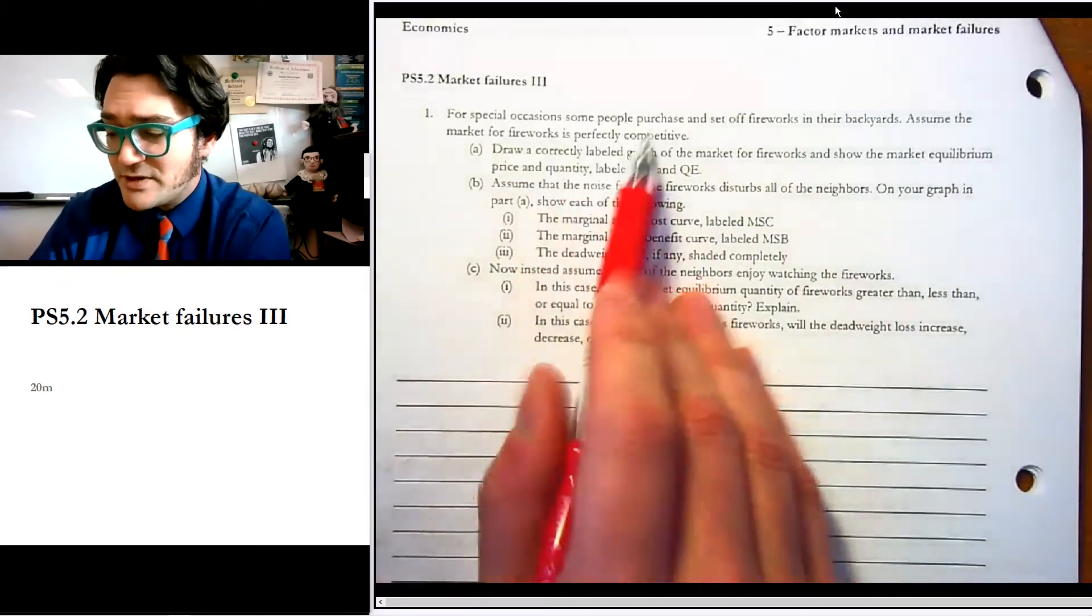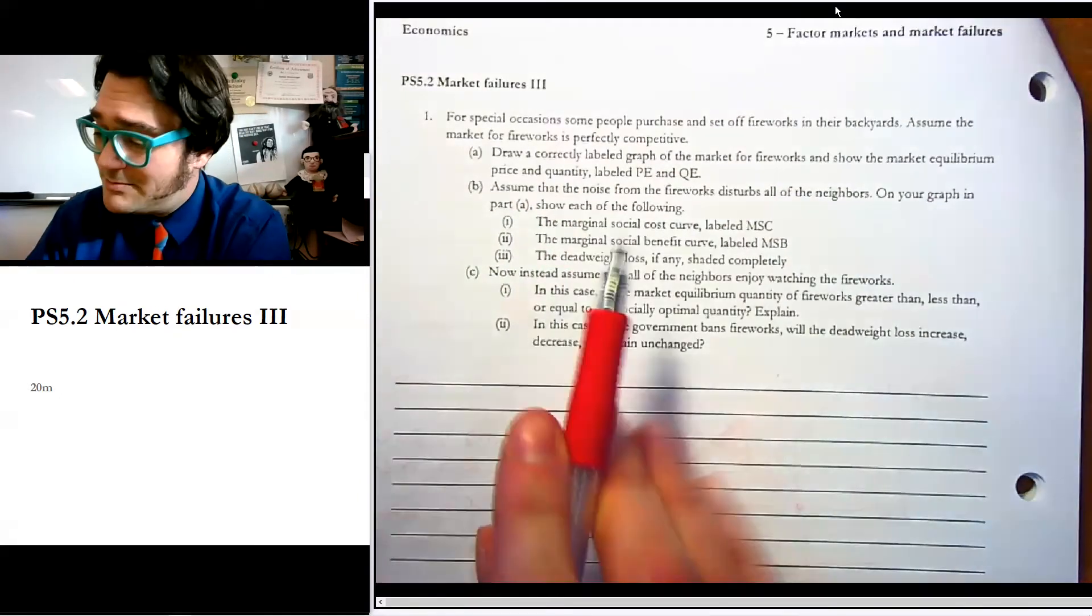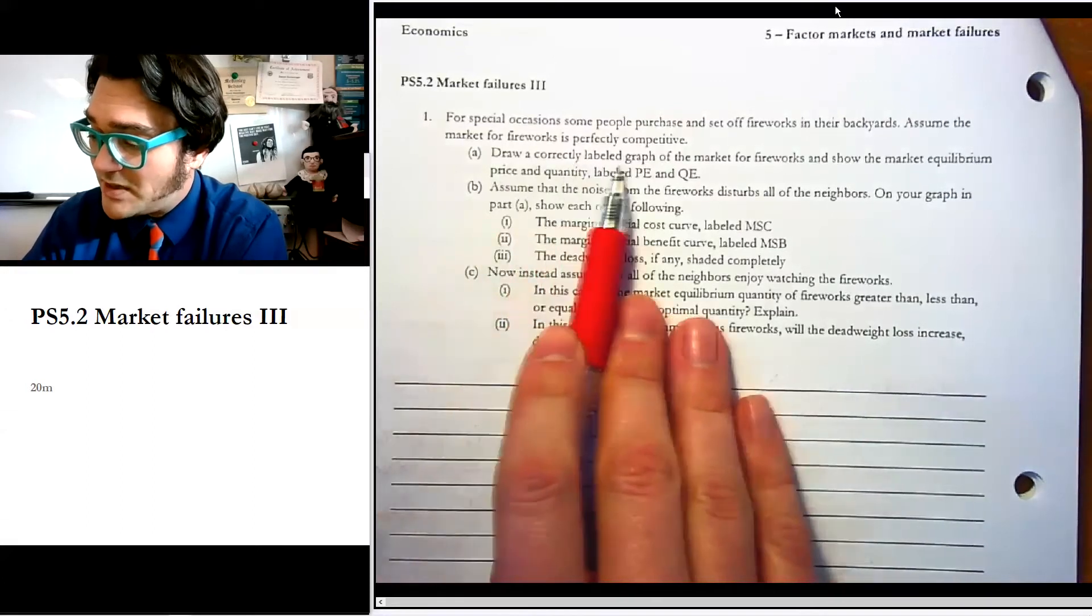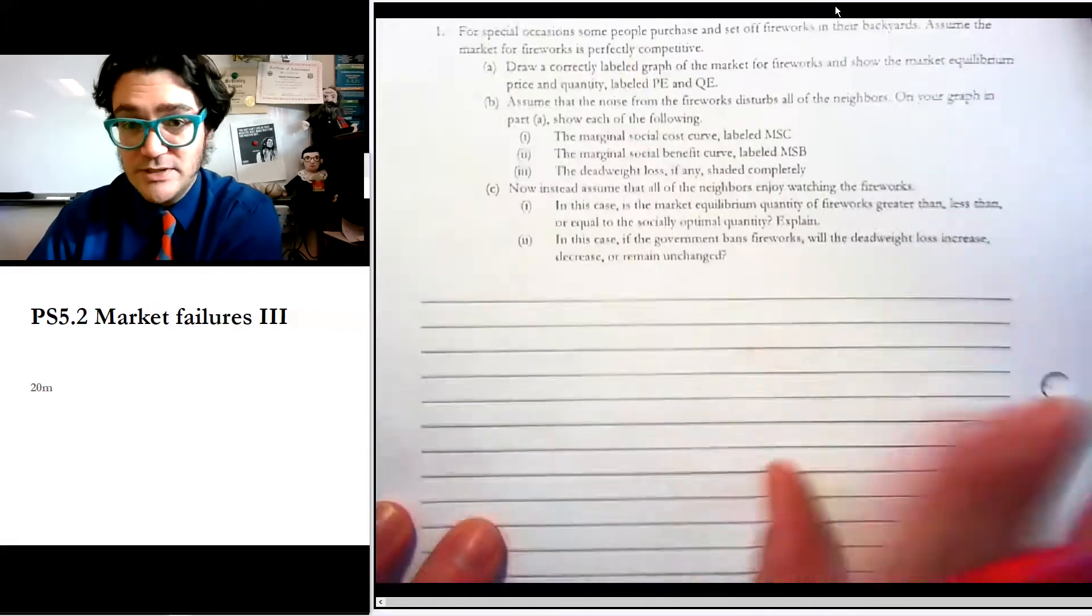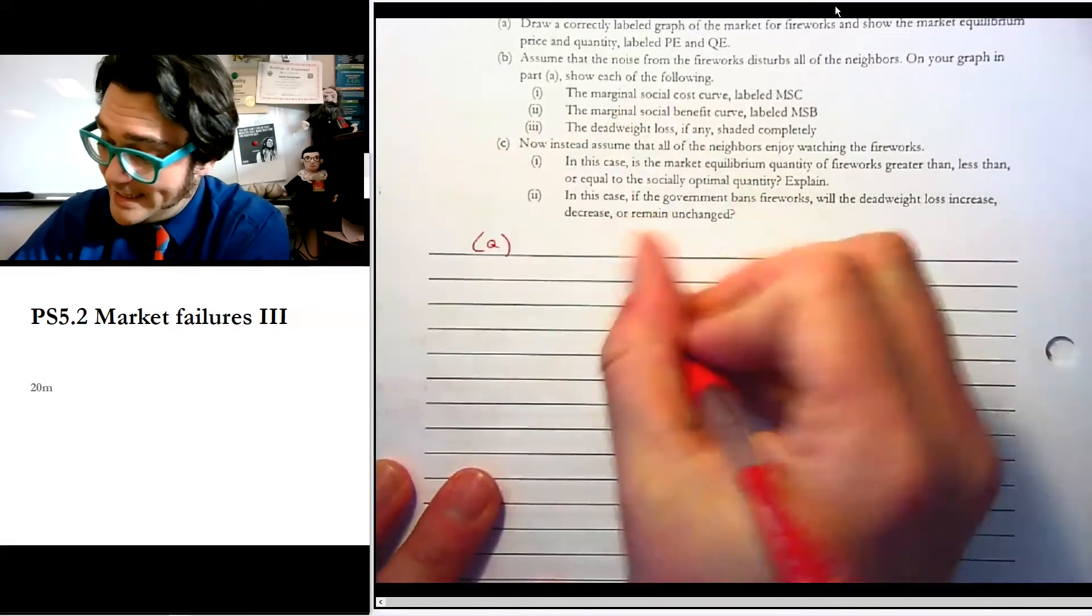Assume the market for fireworks is perfectly competitive. That's a big assumption. It's probably not, but whatever. Draw a correctly labeled graph of the market for fireworks. Show the market equilibrium price quantity, PE, QE. Oh, that's some interesting stuff. Okay. We can do that.